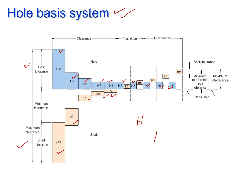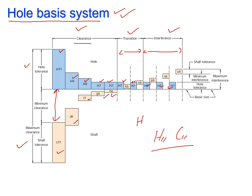If you use H11 and C11, there will be clearance between your hole and shaft. Correspondingly, certain combinations result in clearance fits, other combinations result in transition fits, and yet other combinations of hole and shaft sizes result in interference fits. This is the diagram for the hole basis system.